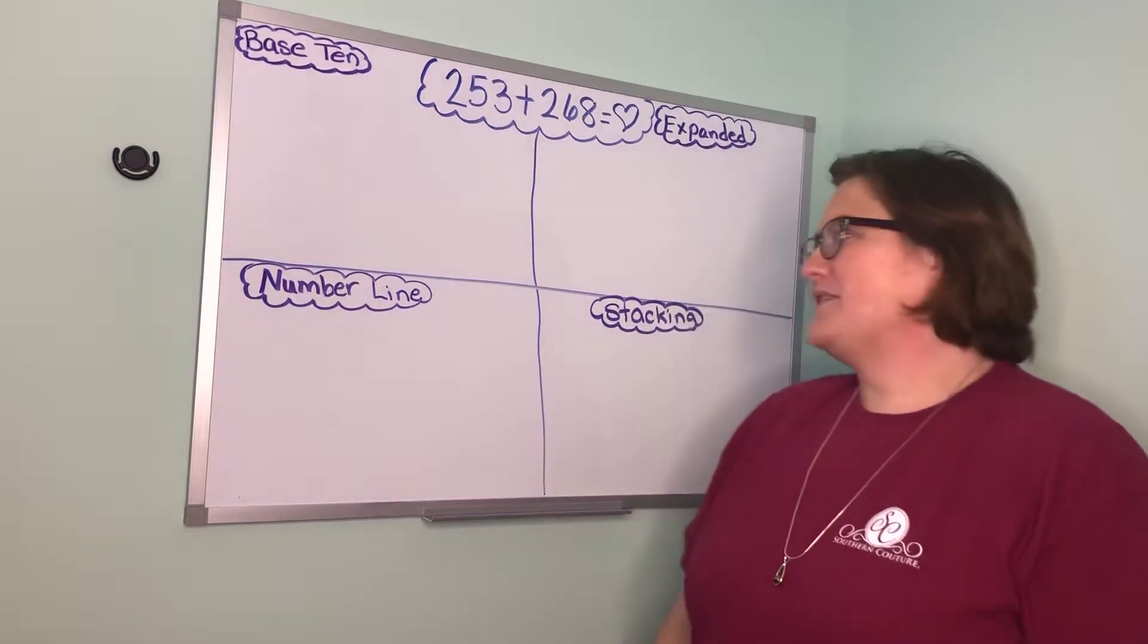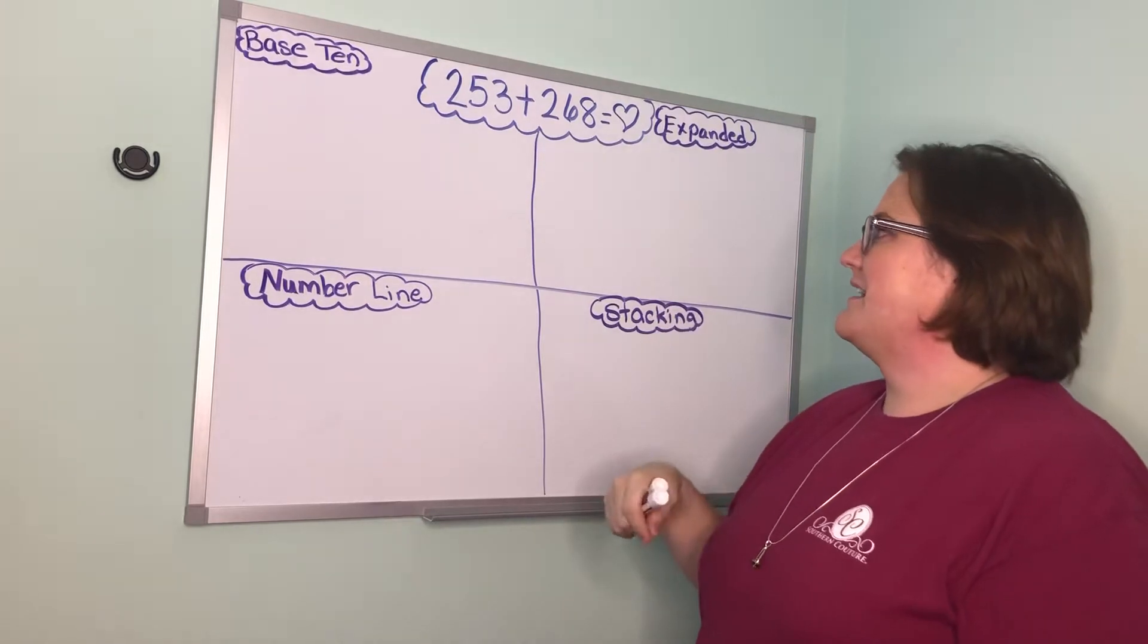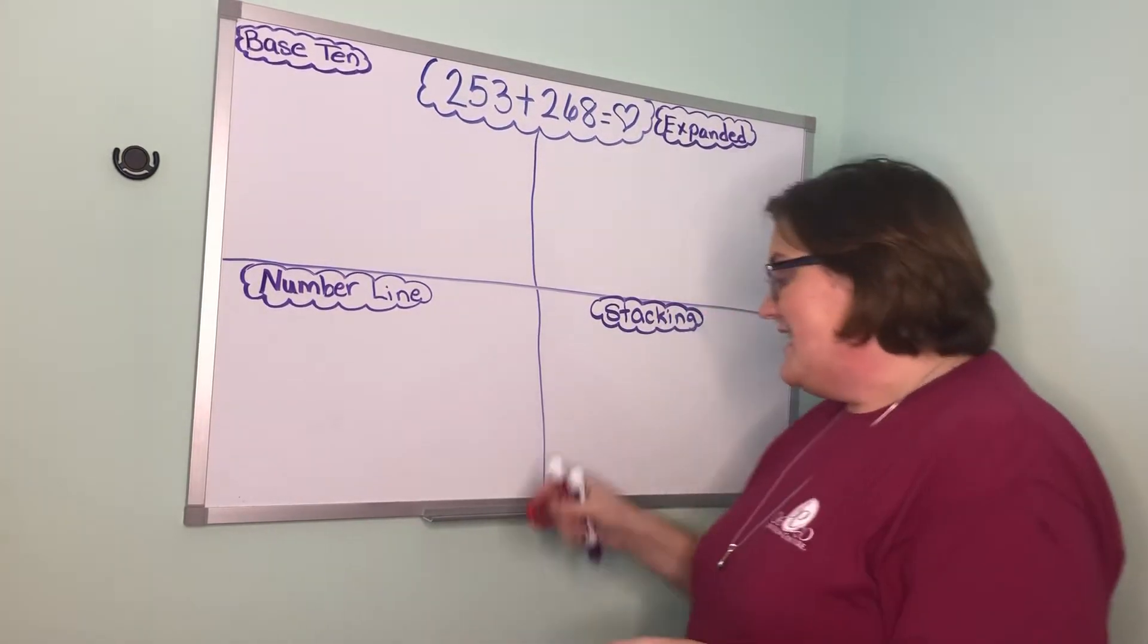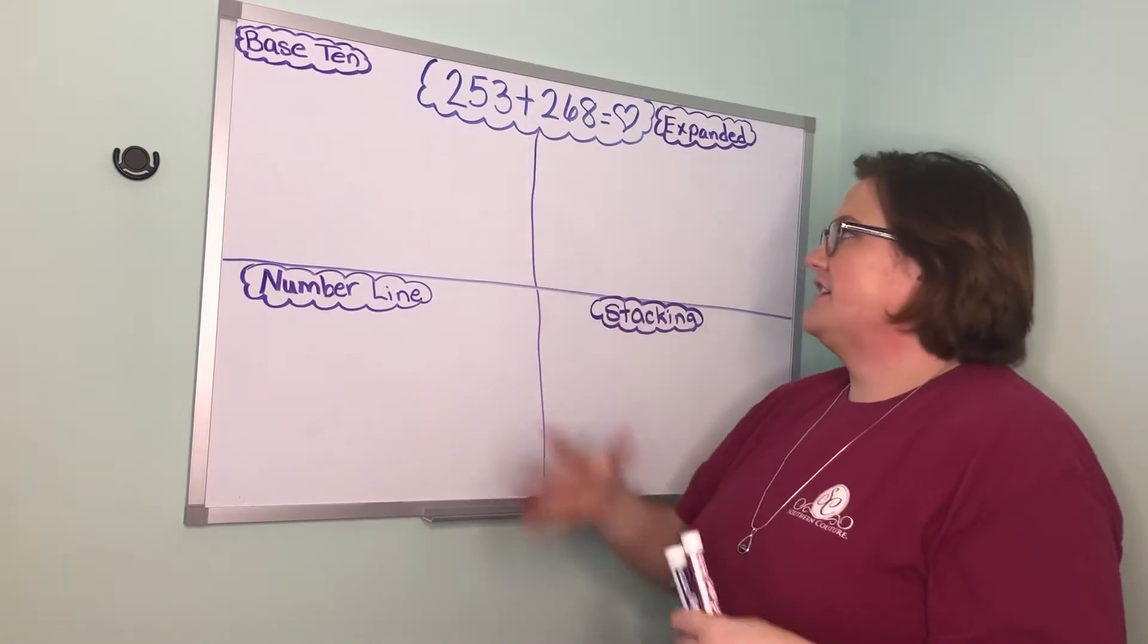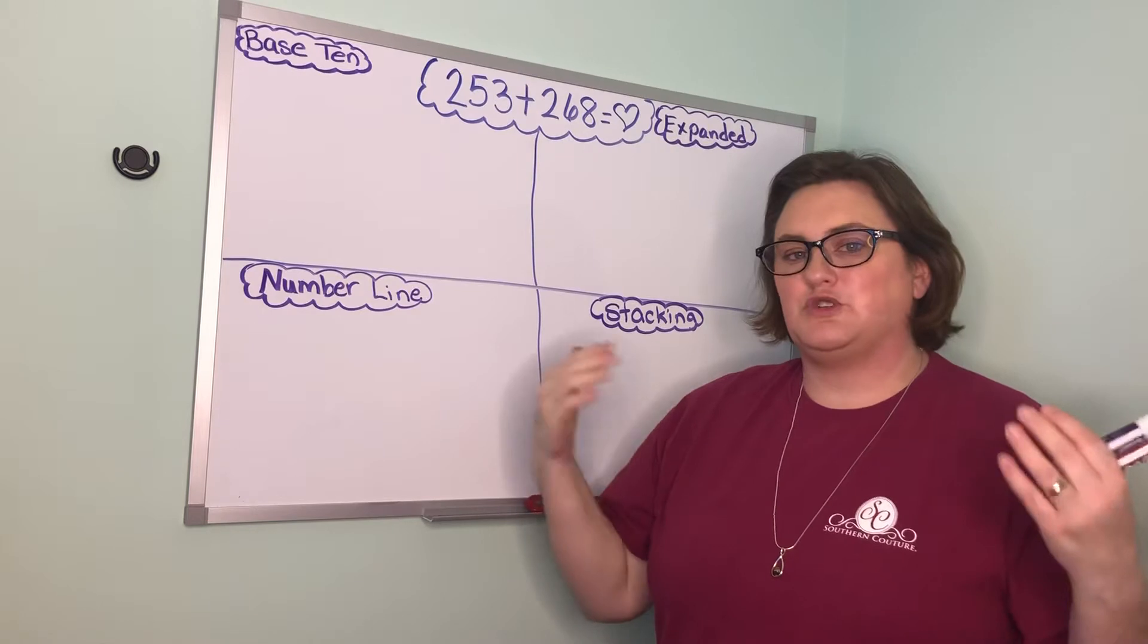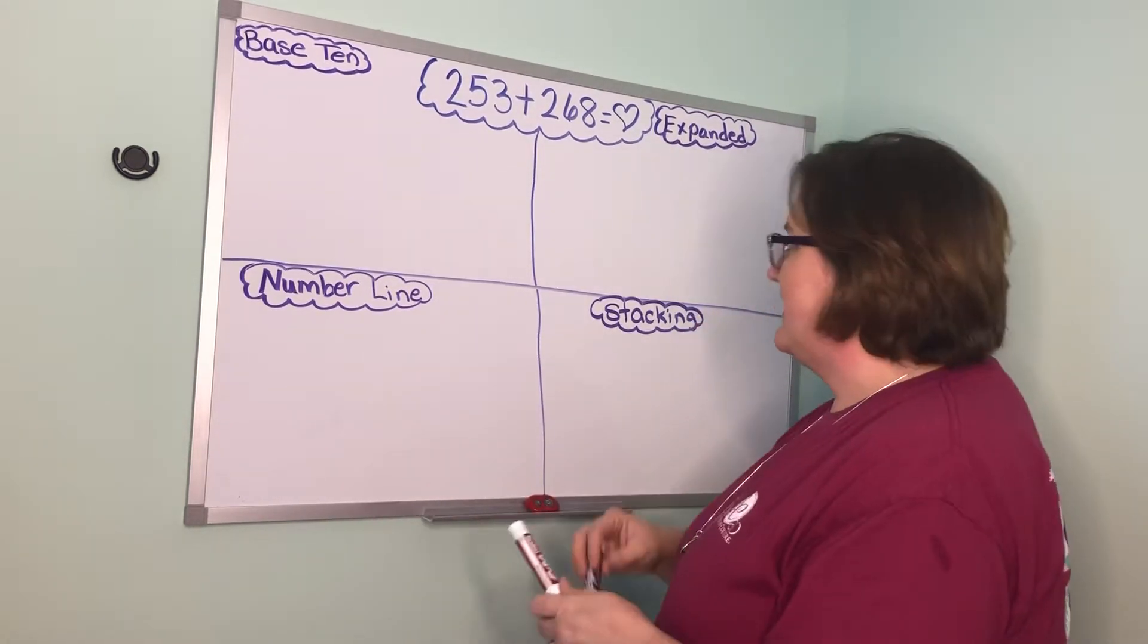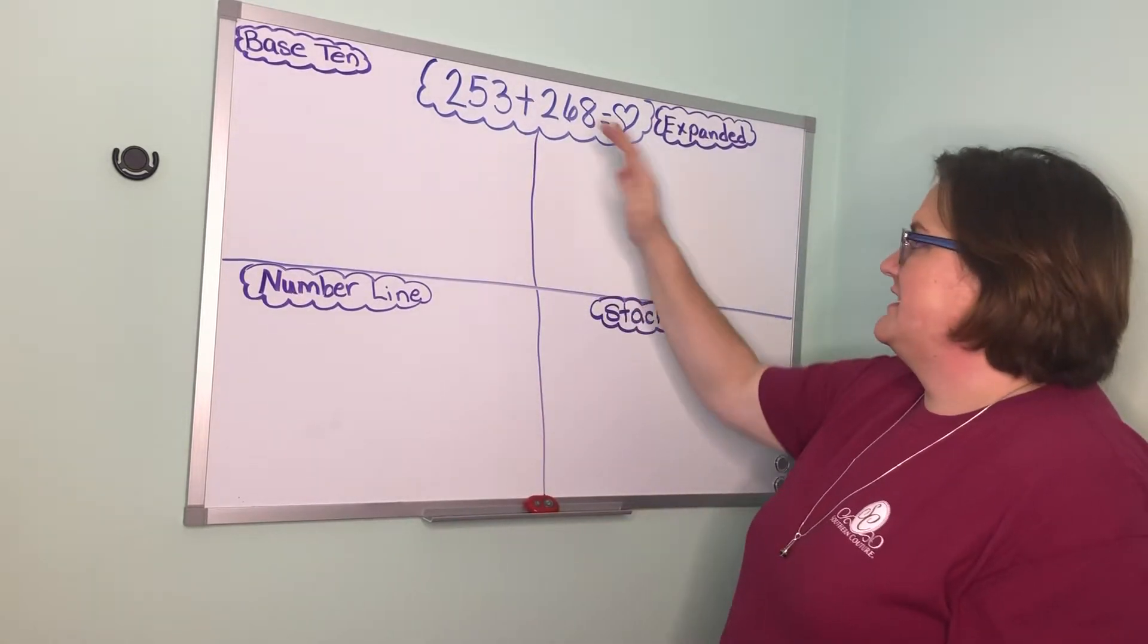Hey boys and girls, today we're going to go back to addition and we're going to talk about adding three digit plus three digit with regrouping. This is just a review, but I did pick kind of a trickier problem where you have to regroup in two places because you will see that on your assignment. So again, we're going to go over the four strategies and this time it's going to be three digit plus three digit.